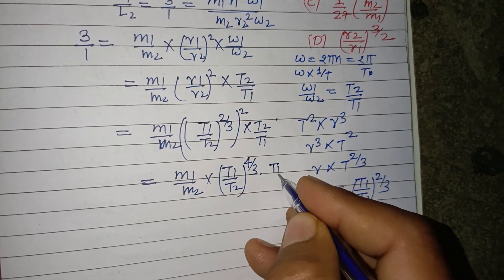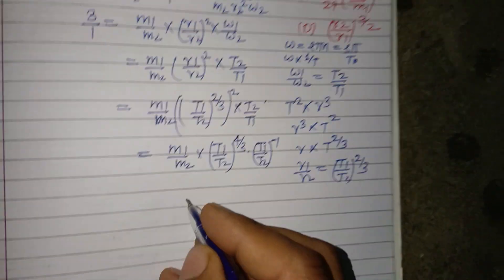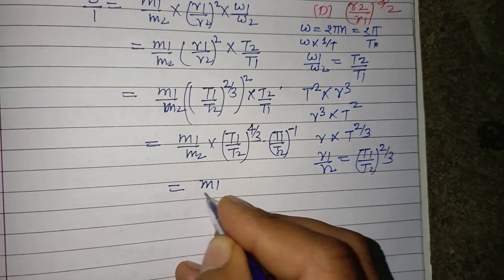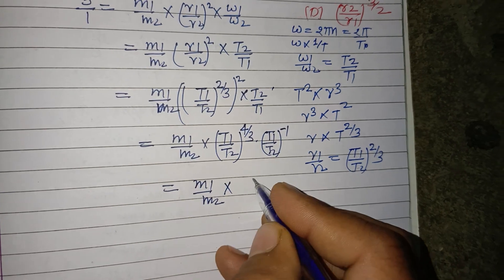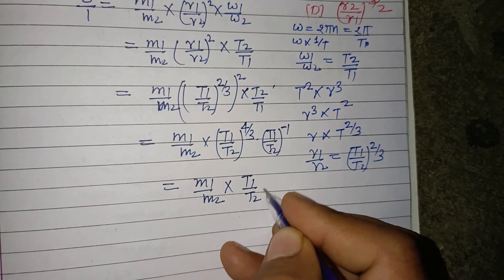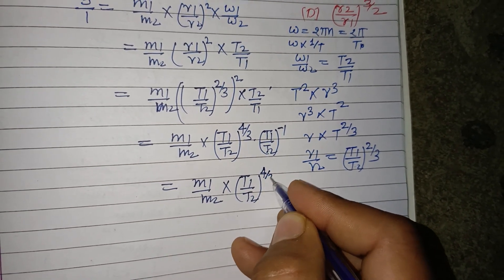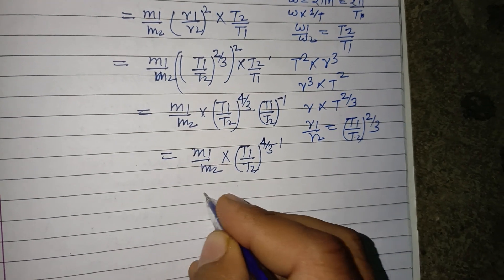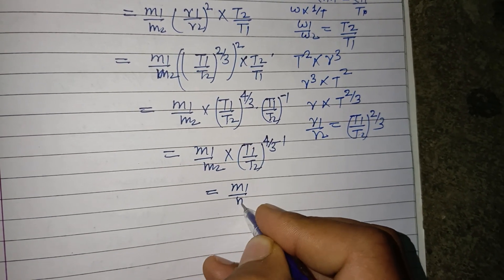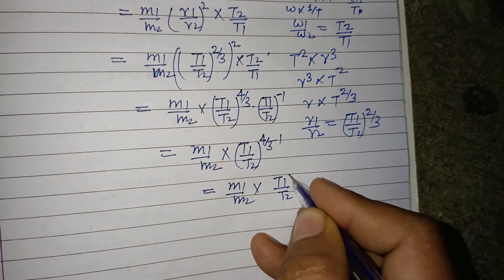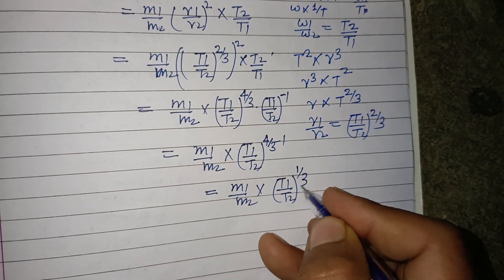We write it as T2 upon T1 as T1 upon T2 to the power minus 1. So this is M1/M2, T1 upon T2 to the power 4/3 minus 1. So this is M1 upon M2, T1 upon T2 to the power 1/3.